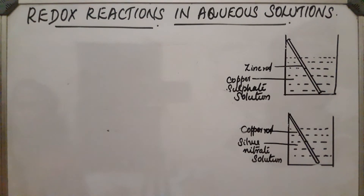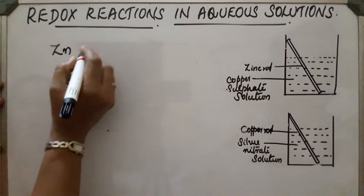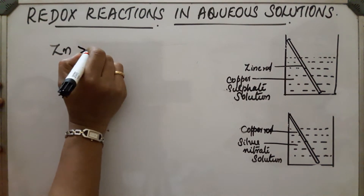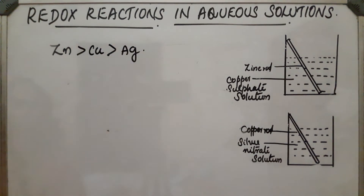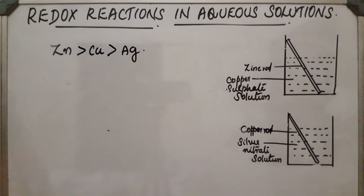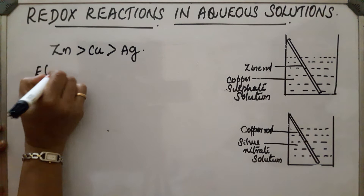From these experiments we notice that the electron releasing tendencies of the given metals are in the order: zinc has more electron releasing tendency than copper, which has more than silver. From this order we can develop a metal reactivity series, also called the electrochemical series.